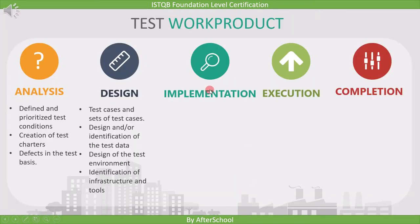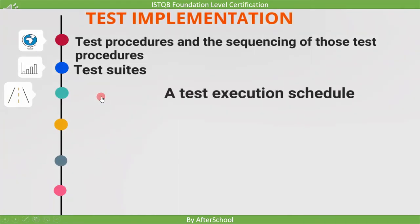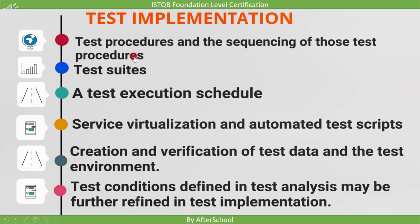Now let's see the work products of test implementation. The first output is test procedures and the sequencing of those test procedures. The second output is test suites — a test suite is a collection of test scripts in execution order. The third is a test execution schedule. The fourth is service virtualization and automated test scripts, used when test implementation involves creating work products using tools. The fifth is creation of test data and test environment, which were only identified in test design but are now created. Finally, test conditions defined in test analysis may be further refined in test implementation.